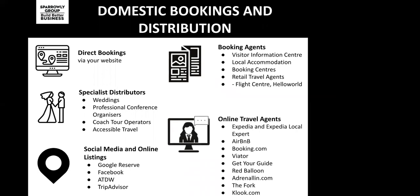And then we have online travel agents — OTAs — which is a lot of what we're going to talk about today. We're probably all familiar with them from planning our own travel. When looking at accommodation, a customer might use Booking.com, Hotels.com, or Airbnb to compare prices before booking directly. There's also a growing market for experience and activity booking sites: Viator, GetYourGuide, Red Balloon, Adrenaline.com, and a new one called Gluk.com. If you're a restaurant, there are booking sites for you too, like The Fork, which is part of the TripAdvisor family.